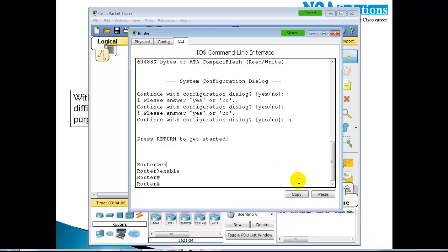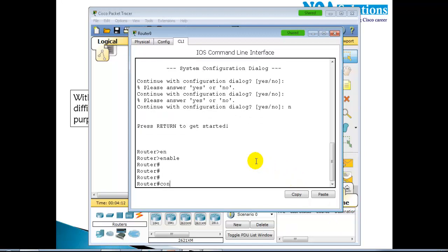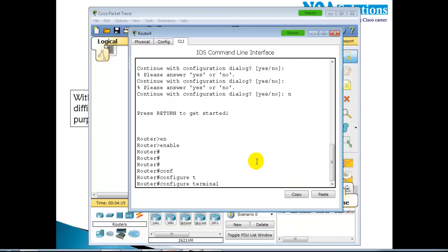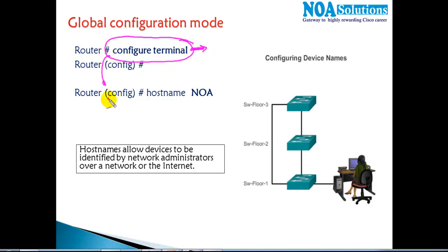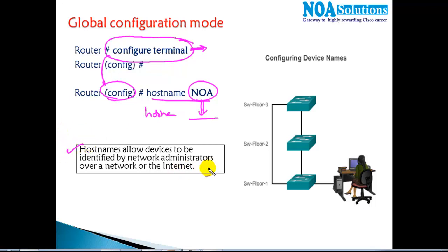Whether you want to change the name, the IP address, or any other configuration, you need to ensure you go to the global configuration mode. To enter global configuration mode, type the command 'configure terminal'. Once you give this command, the router allows you to go to global configuration mode where you can change the hostname — for example, giving the name of a location. The intention of giving a hostname is to allow devices to be identified by the network administrator, like naming three switches 'floor-one', 'floor-two', and 'floor-three'.